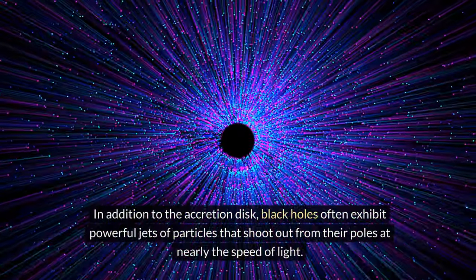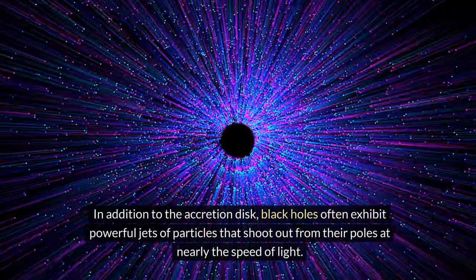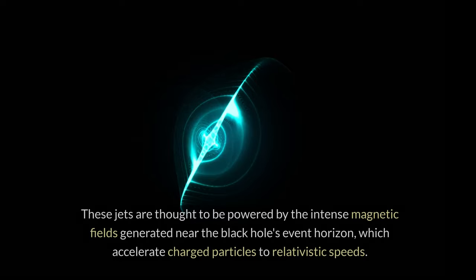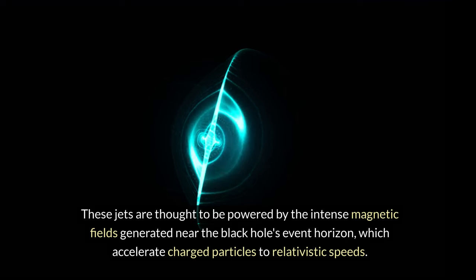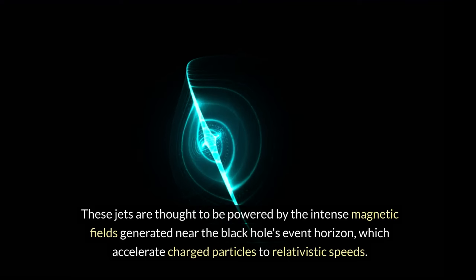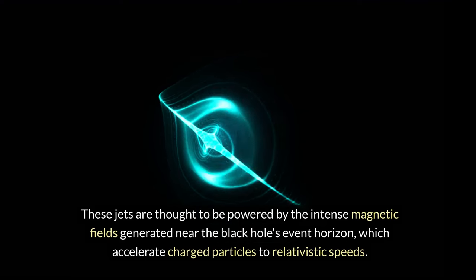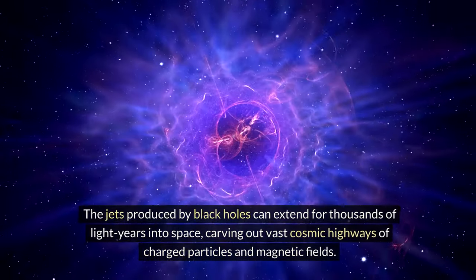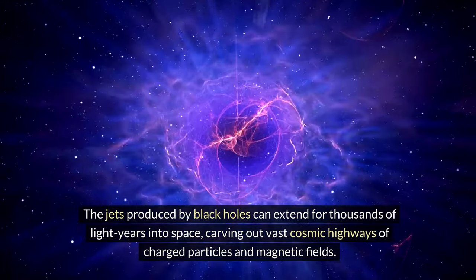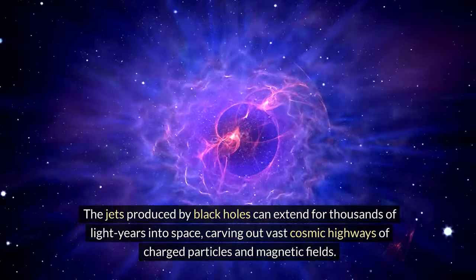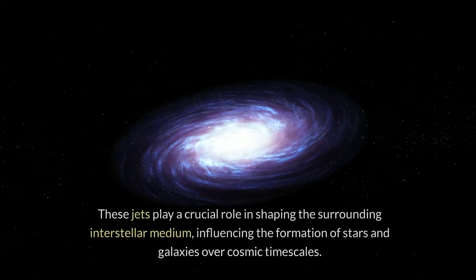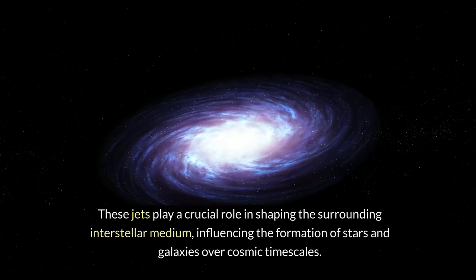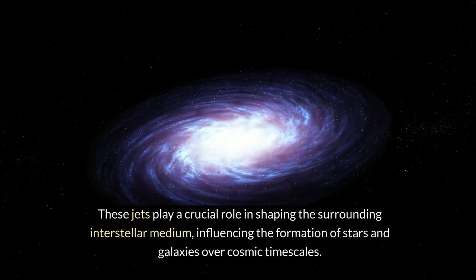In addition to the accretion disk, black holes often exhibit powerful jets of particles that shoot out from their poles at nearly the speed of light. These jets are thought to be powered by the intense magnetic fields generated near the black hole's event horizon, which accelerate charged particles to relativistic speeds. The jets produced by black holes can extend for thousands of light years into space, carving out vast cosmic highways of charged particles and magnetic fields. These jets play a crucial role in shaping the surrounding interstellar medium, influencing the formation of stars and galaxies over cosmic timescales.